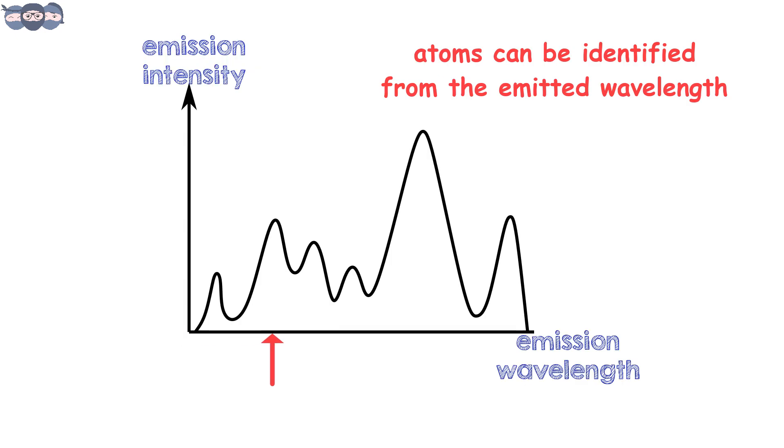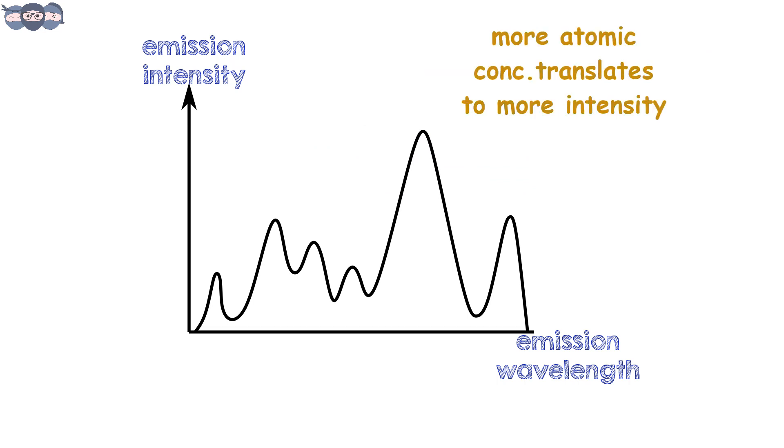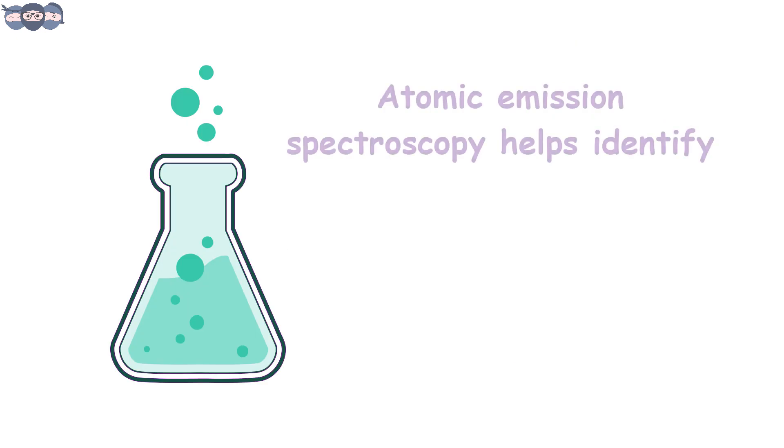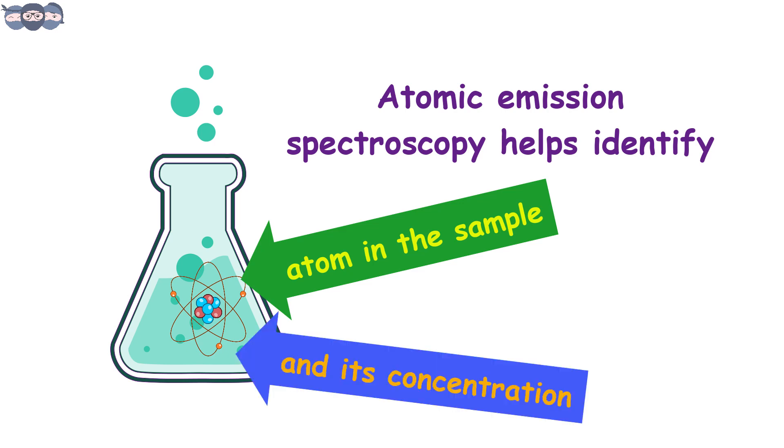From these wavelengths, the experimenter is able to identify the type of atoms. Similarly, the intensity of the emissions is dependent on the concentration or the quantity of the atoms present in the sample. If more the number of atoms, more is the intensity and vice versa. In this manner, one can identify a particular atom present in the sample as well as its concentration.